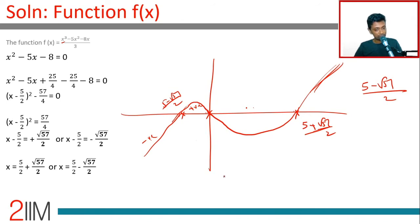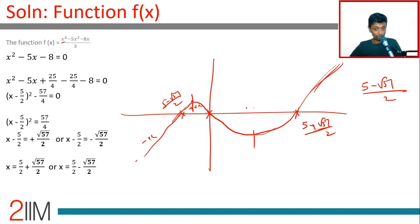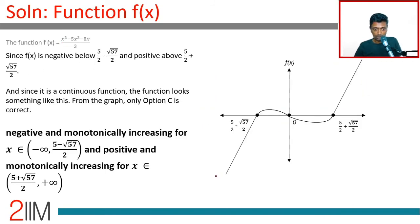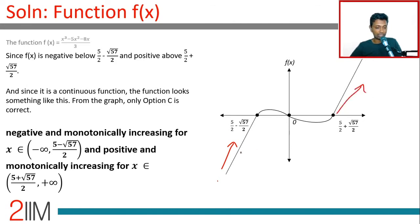Once you have this curve, it's just a matter of figuring out from the answer choices which one fits best. The function decreases from some point to another, then increases. It is negative in the middle region and positive elsewhere. Looking at the choices — negative and monotonically increasing for x greater than (5 + √57)/2 onwards — that's correct. Option C fits best.